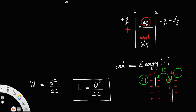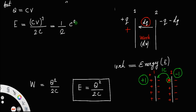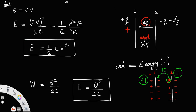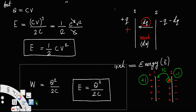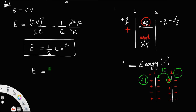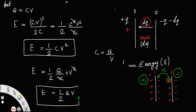This equation has several other forms. Since Q = CV, we can substitute: E = (CV)²/(2C) = C²V²/(2C) = ½CV². This is another expression for the energy. Also, since C = Q/V, substituting gives E = (Q/V)·V²/2 = ½QV. So the three equivalent expressions for energy stored in a capacitor are: E = Q²/(2C), E = ½CV², and E = ½QV.